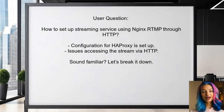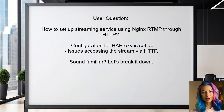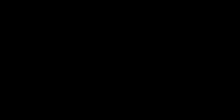Here's the situation. One user reached out asking how to set up their streaming service using NGINX RTMP, but they want to stream through HTTP instead. They've set up a configuration for HAProxy, but are running into issues accessing the stream via HTTP. Sound familiar? Let's break it down.